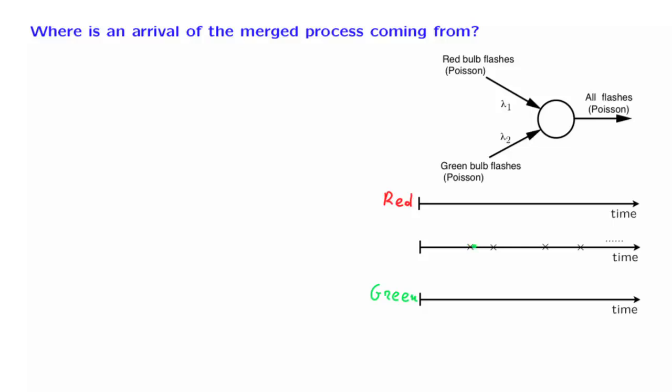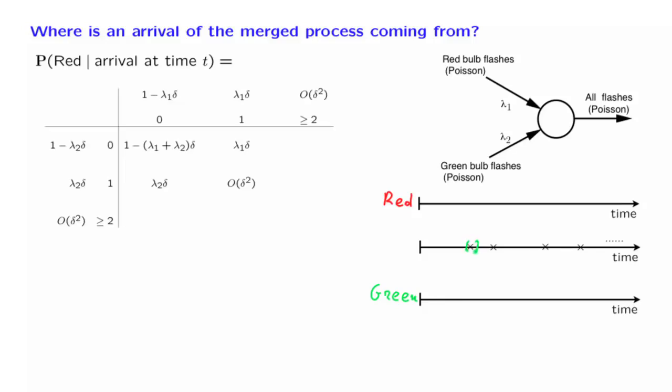We cannot know, but can we tell what is the probability that it came from the red stream? The way to answer this question is to look at the table of all the things that can happen during a little interval around that particular time in which we've had an arrival. We are told that there was an arrival at time t, or an arrival during a small interval around time t. This means that we are told that this event here has happened.